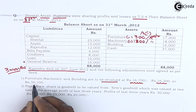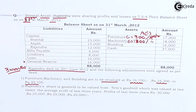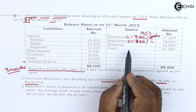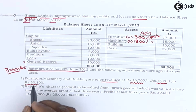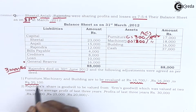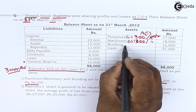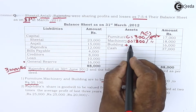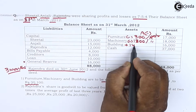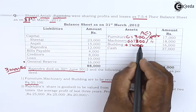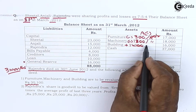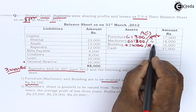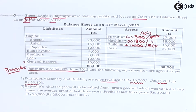Building is revalued at 30,100. The old value of building is 16,000 and the new value is 30,100 — it has gone up by 14,100. This is a gain for the firm, so it will be credited to the revaluation account.